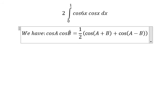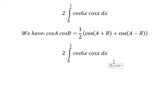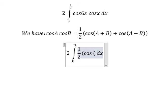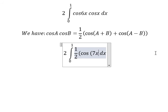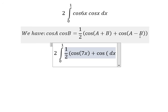So we apply this formula for this one in here, and you got about 1 over 2. A plus B, that is 6x plus x, you got about 7x, plus cosine of 6x minus x, you got about 5x.